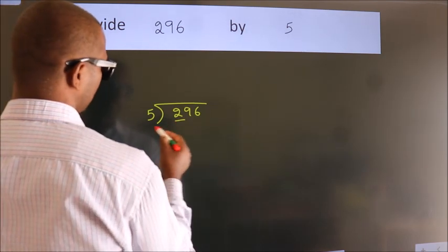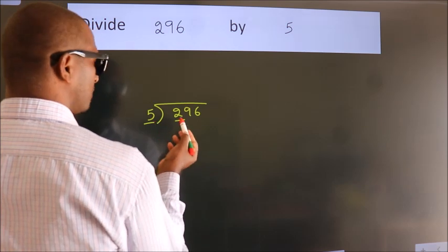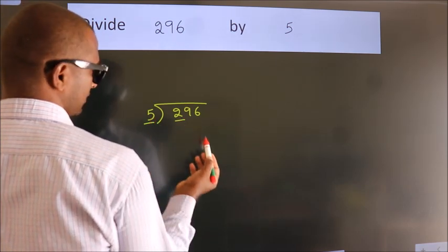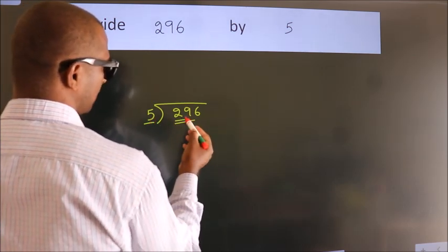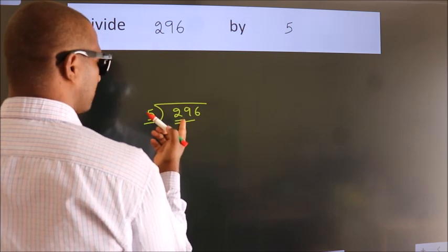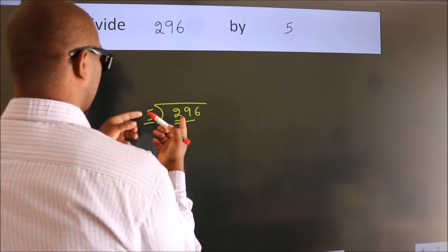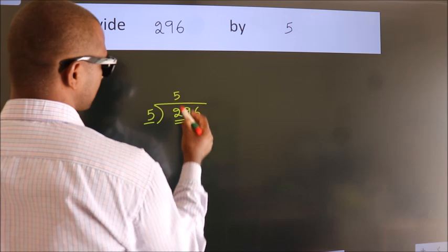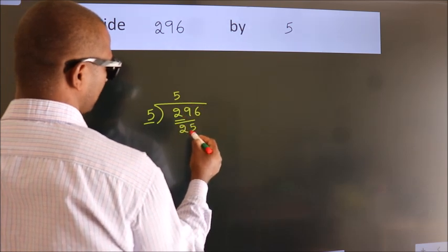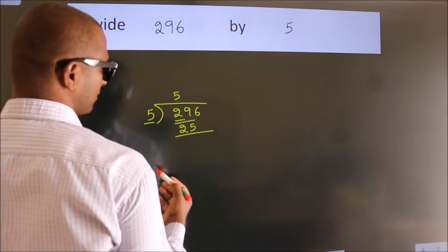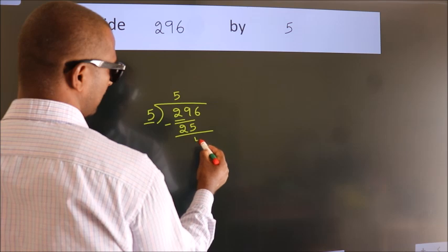Here we have 2. Here 5. 2 smaller than 5. So we should take 2 numbers. 29. A number close to 29 in the 5 table is 5 fives 25. Now we should subtract. We get 4.